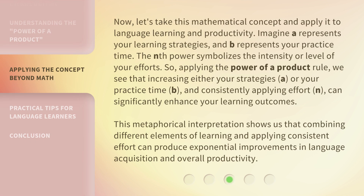Now, let's take this mathematical concept and apply it to language learning and productivity. Imagine a represents your learning strategies, and b represents your practice time. The nth power symbolizes the intensity or level of your efforts. So, applying the power of a product rule, we see that increasing either your strategies (a) or your practice time (b), and consistently applying effort (n), can significantly enhance your learning outcomes. Combining different elements of learning and applying consistent effort can produce exponential improvements in language acquisition and overall productivity.